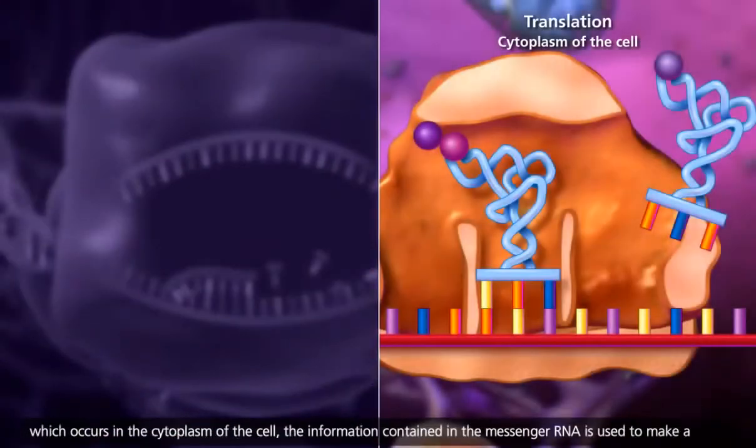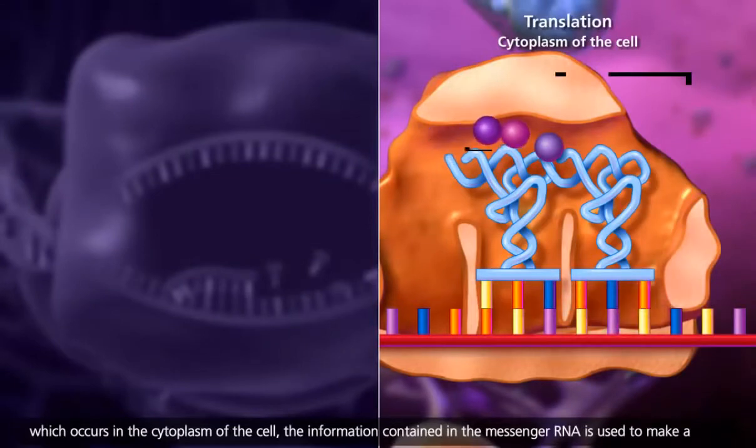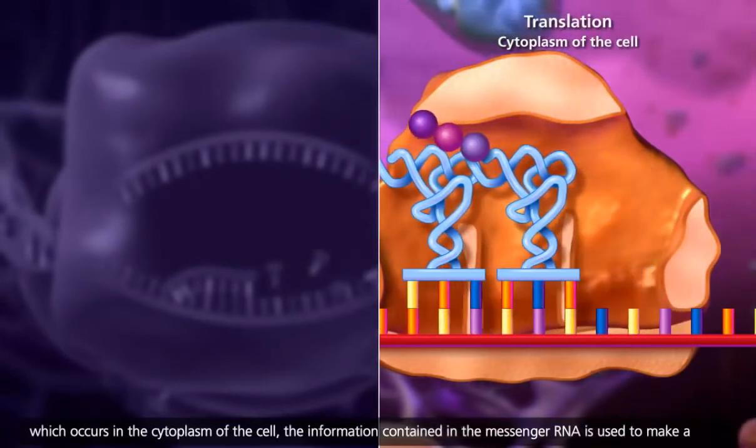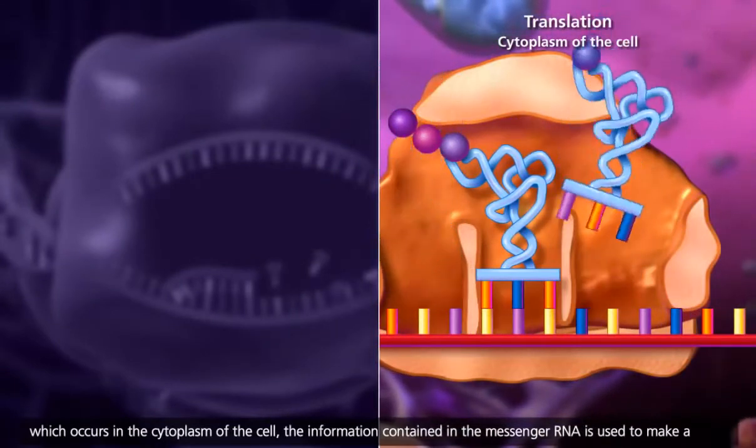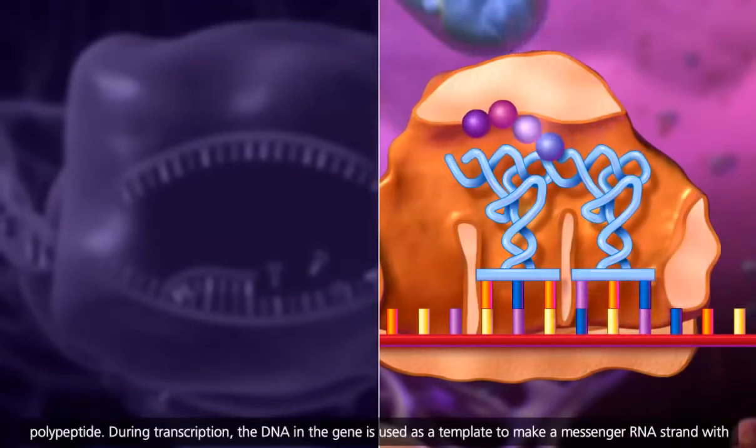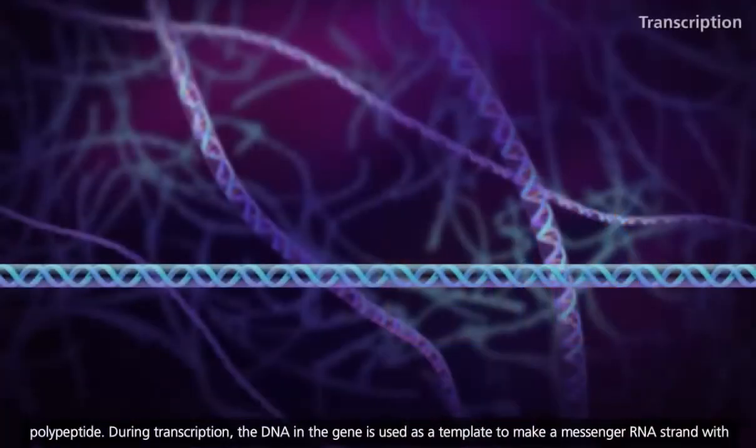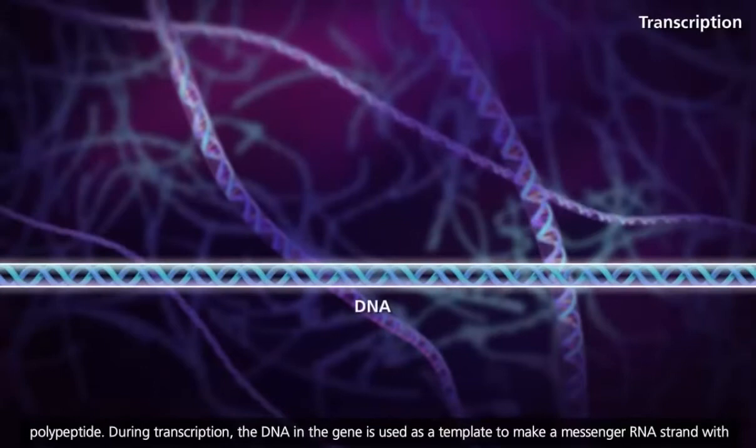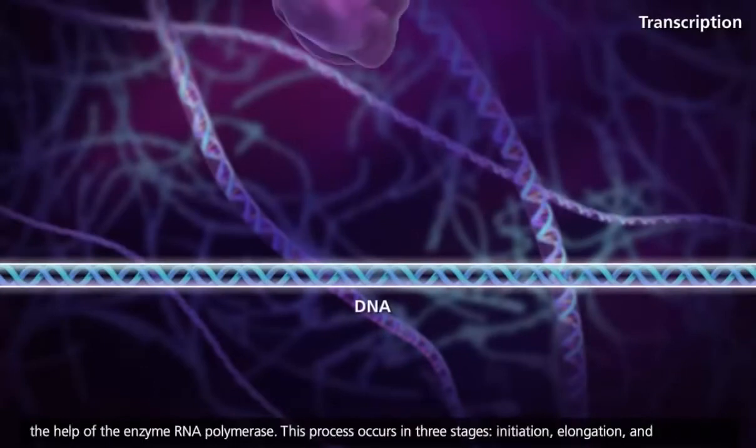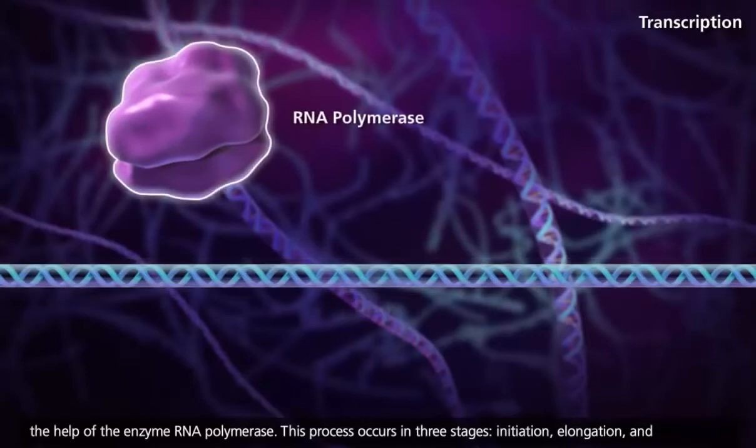Then in translation, which occurs in the cytoplasm of the cell, the information contained in the messenger RNA is used to make a polypeptide. During transcription, the DNA in the gene is used as a template to make a messenger RNA strand with the help of the enzyme RNA polymerase.